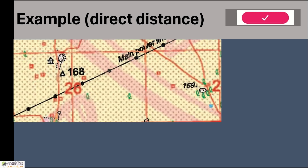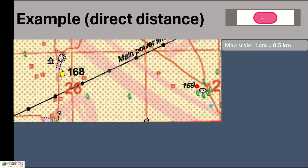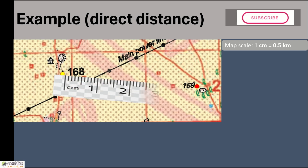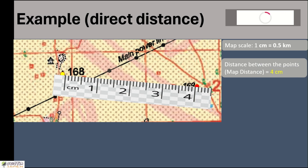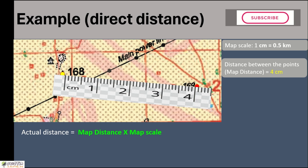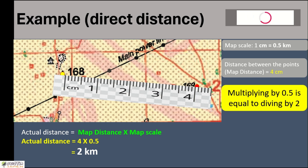Let's take another example with a map extract. Here we have two heights: a triangulated height and a spot height. Using a ruler, the distance between these two dots is 4 centimeters. Applying the formula — map distance × map scale — that is 4 × 0.5, the answer is 2 kilometers.